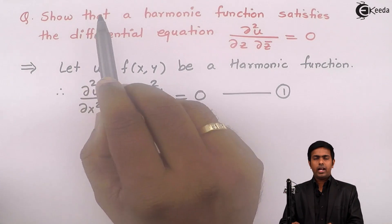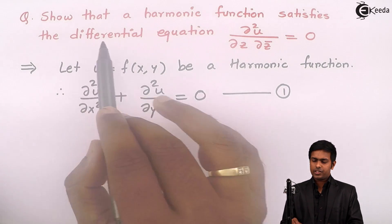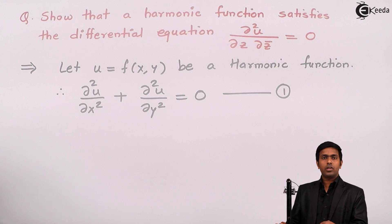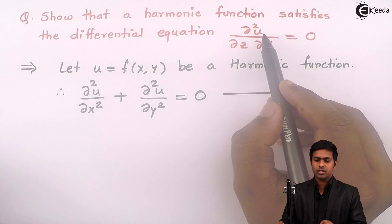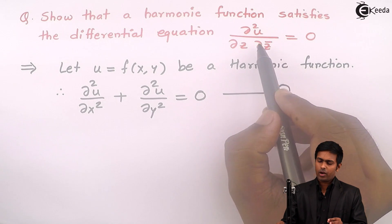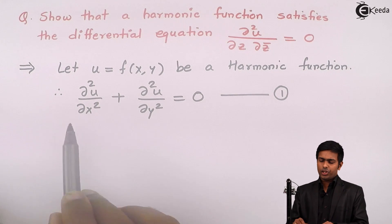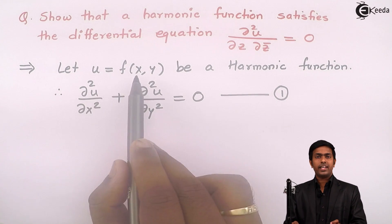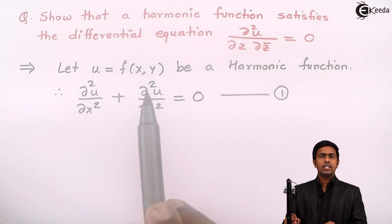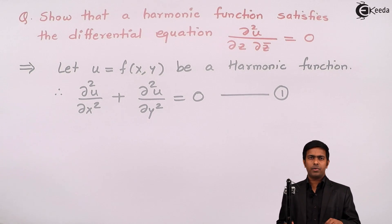We have to show that u satisfies this differential equation. If you observe carefully, this differential equation is with respect to z and z̄, so we have to differentiate u with respect to z and z̄. However, u is given in terms of x and y. So how do we get u in terms of z and z̄? We are going to use the concept of complex numbers.